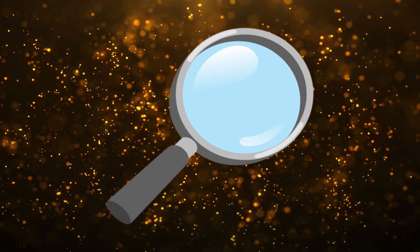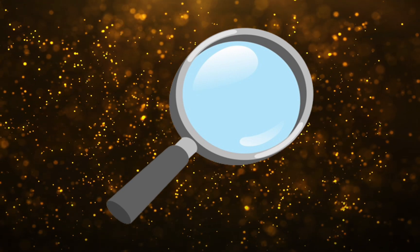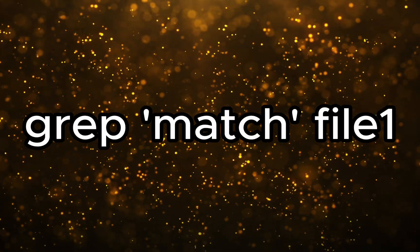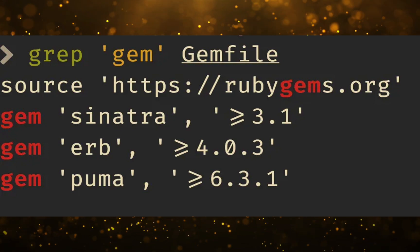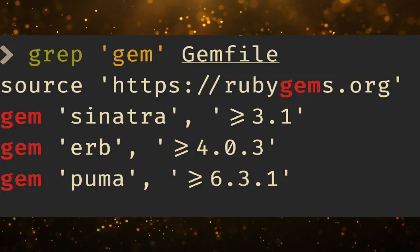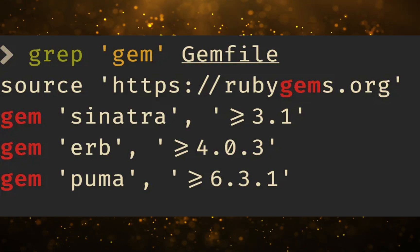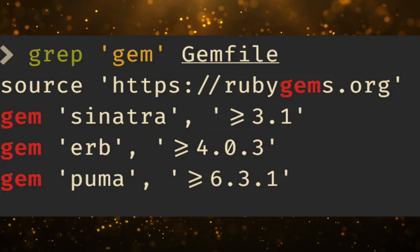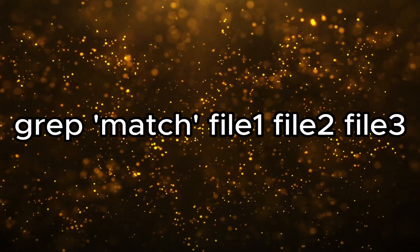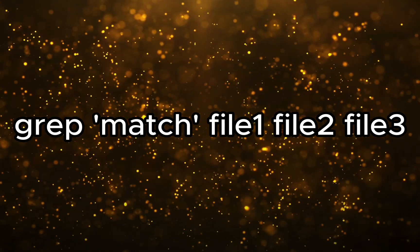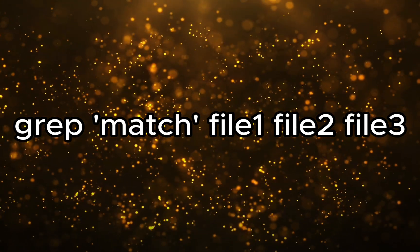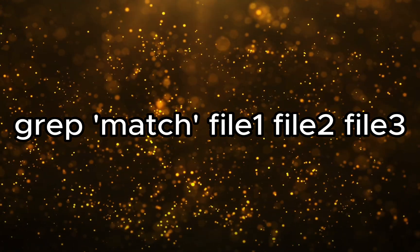First up, let's search for a string in a file. You use grep, the string match, and then whatever file you want to search through. You can use this to search through your Gemfile or any other files like your package.json to quickly see if you have something installed. If you want to search through multiple files, simply add them to the end — you can do grep, the match, and then file1, file2, and file3 to search through all of those files for the same match.